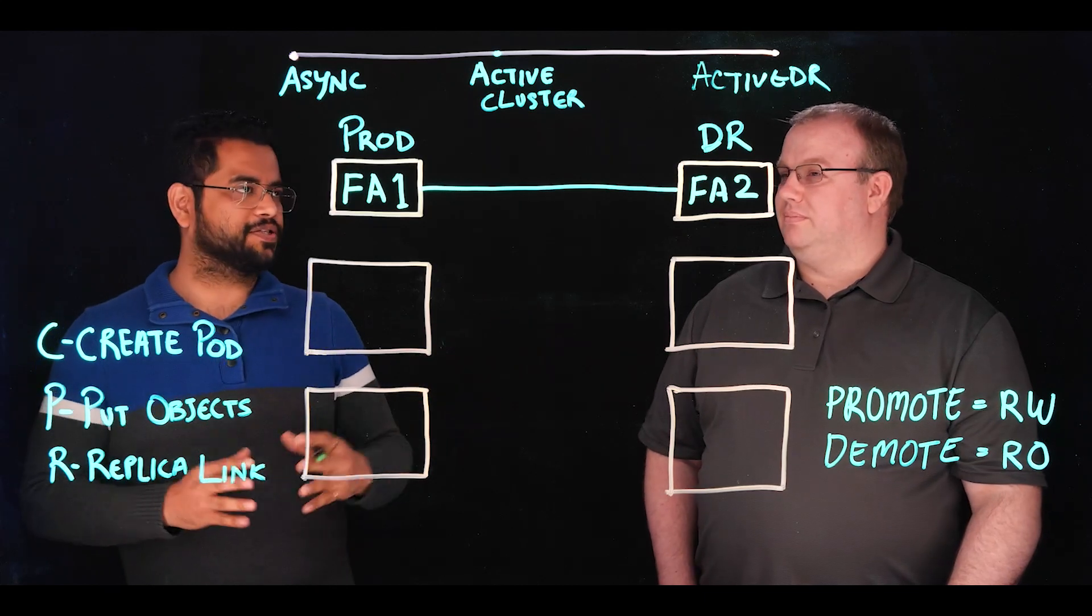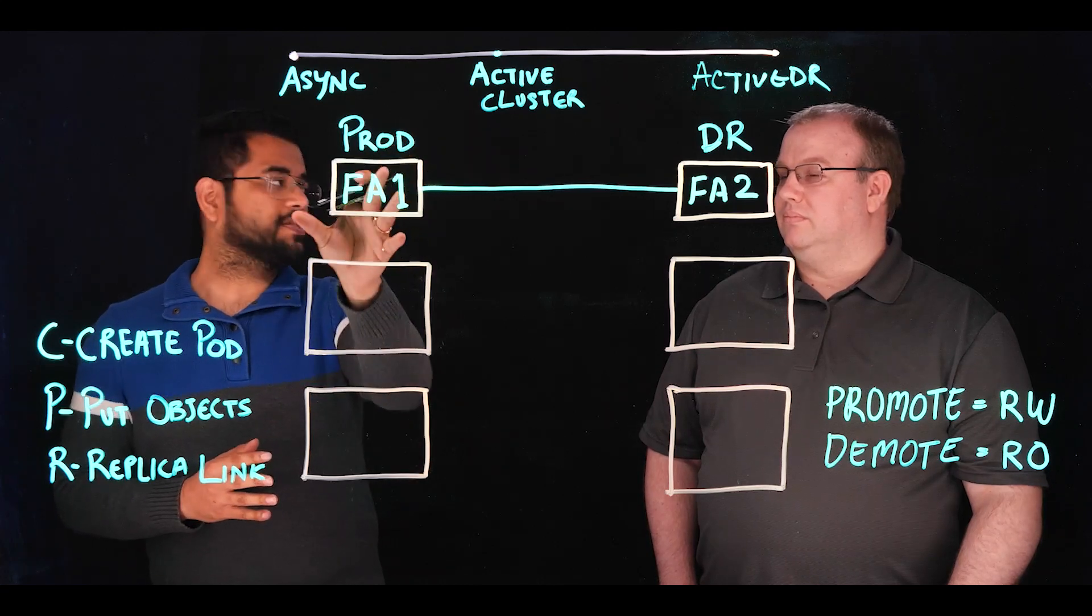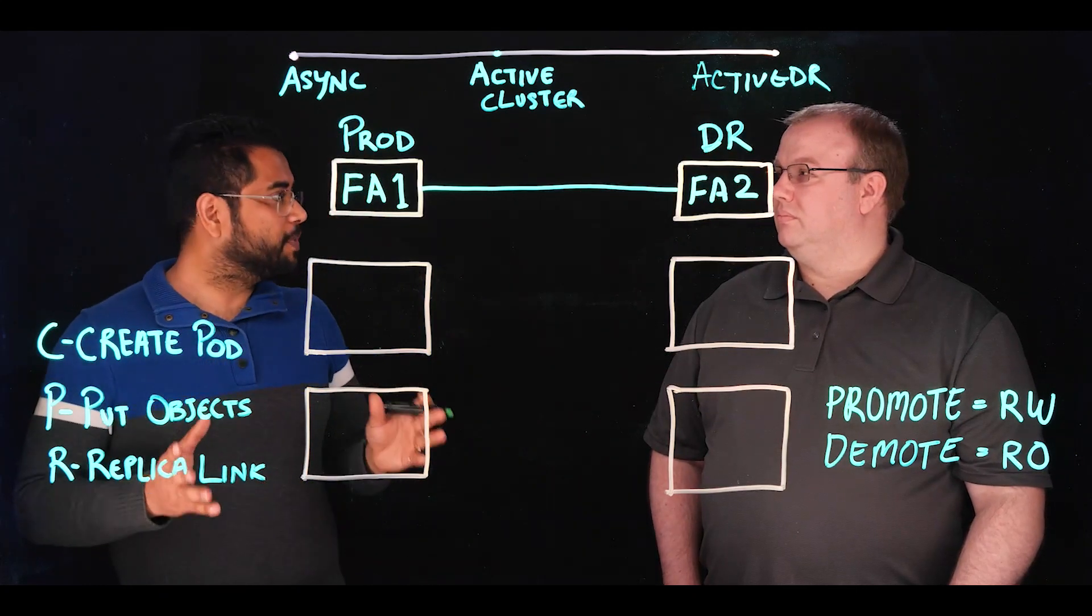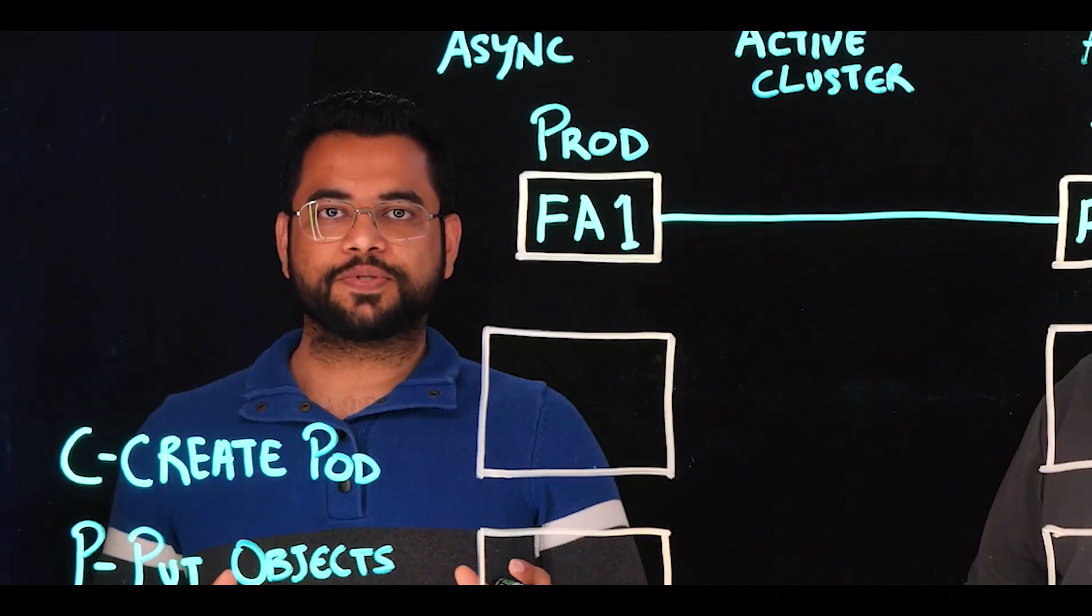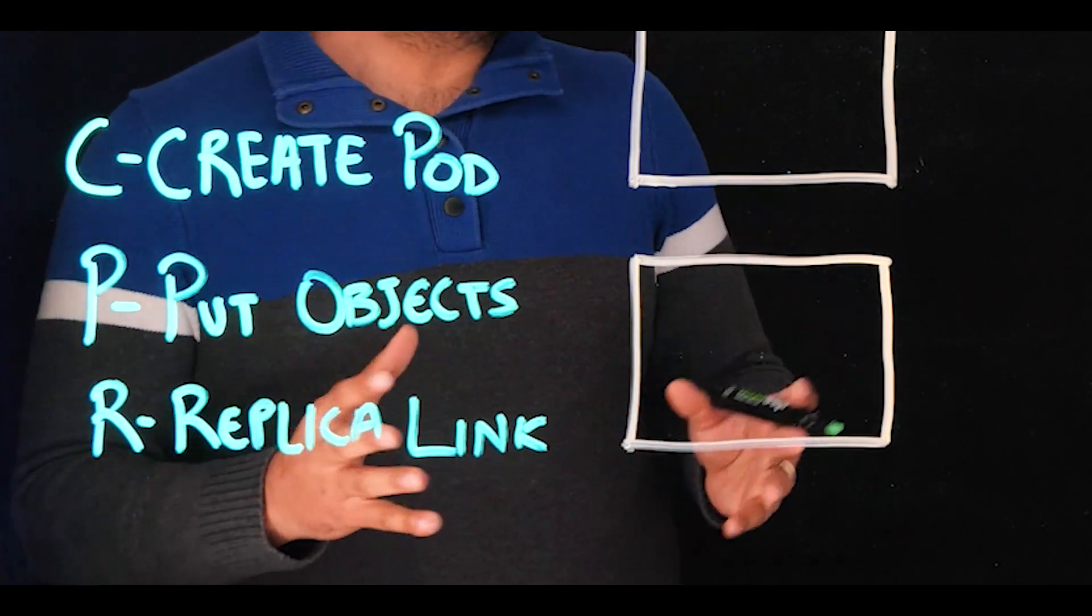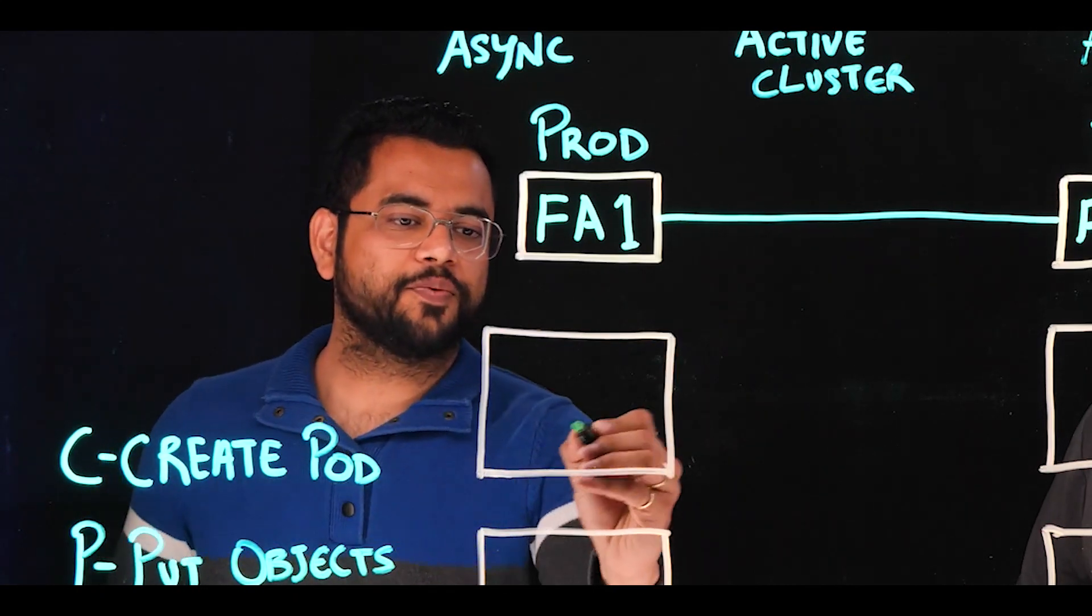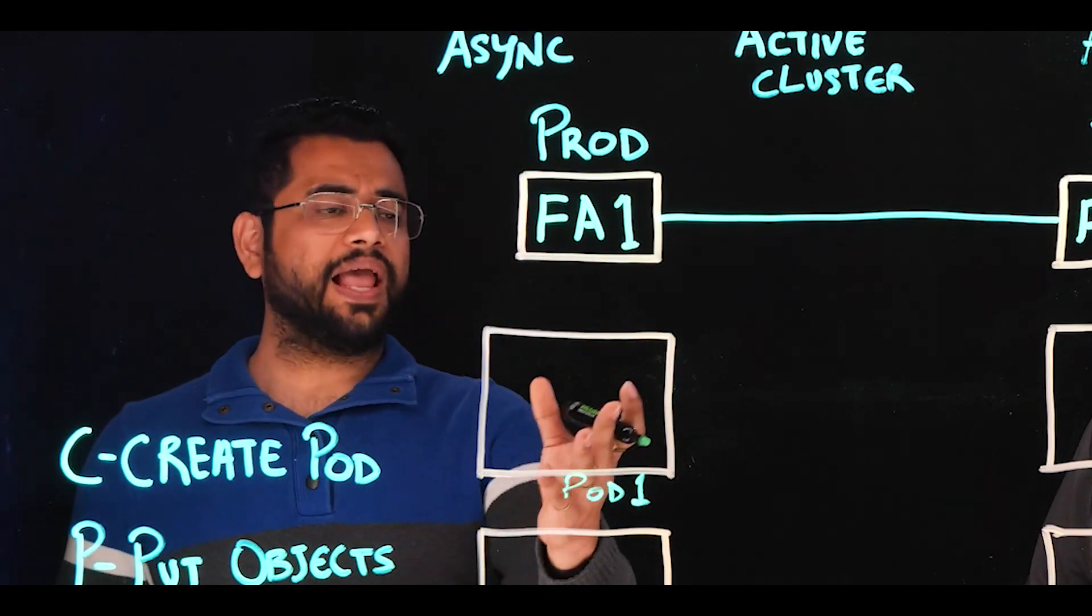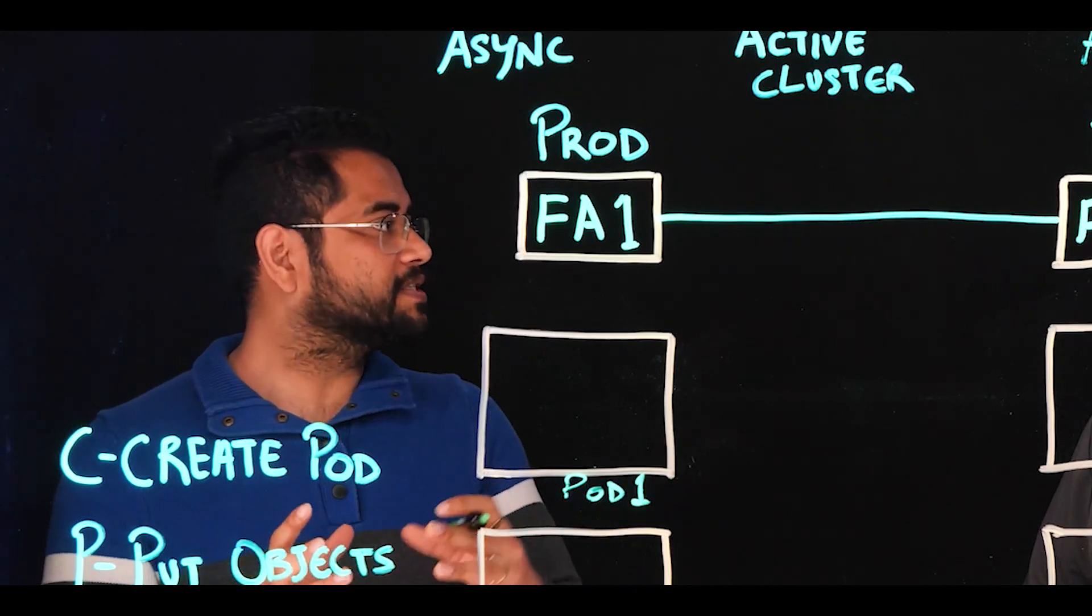The first prerequisite for any replication solution is to have two flash arrays. So in this example, I have flash array 1, which is our prod site, and flash array 2, which is our DR site. You just need to make sure that these are connected over a replication connection. Once we have that, all I tell my customers is to prepare for DR, remember to do CPR. And it's an easy way to remember the setup steps. C stands for creating a pod. So in this example, we have pod 1, which is on the prod site. And pods are nothing but a logical container to group and hold the objects that you want to replicate together.